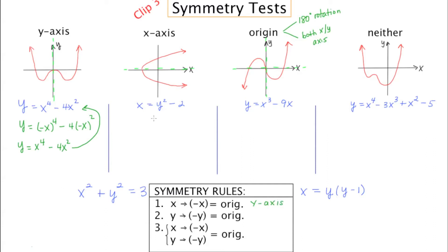If you're suspicious that a function or graph has x-axis symmetry, you're going to do the exact opposite: take every occurrence of y and replace it with negative y. Negative y squared is negative y times negative y, which is y squared. So we have x equals y squared minus 2 — the result is the same as the original, which means it has x-axis symmetry. If you replace y with negative y and get the original, that's x-axis symmetry.